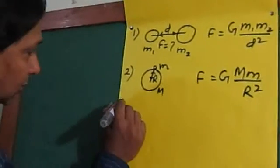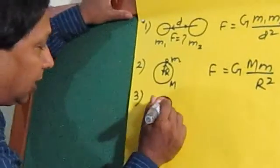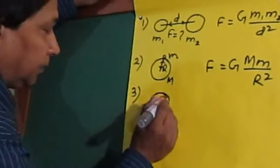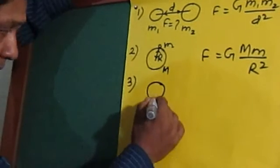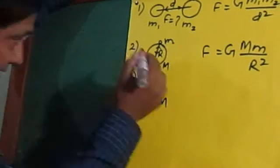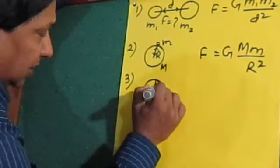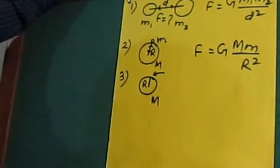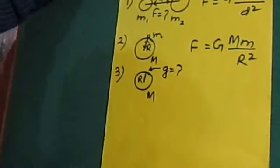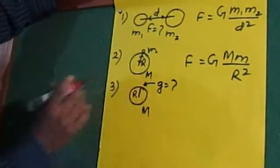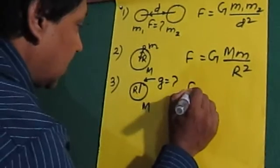Now third one. Let's say we have a heavenly body and I want to calculate the acceleration due to gravity on its surface. The mass of this big heavenly body can be taken as capital M and the radius of this heavenly body is R. If we want to calculate the acceleration due to gravity on the surface, that can be denoted by g. If this type of numerical comes, then we'll solve it by using this equation.